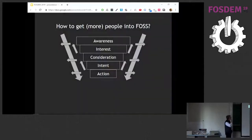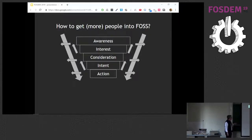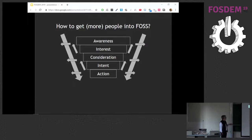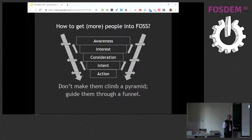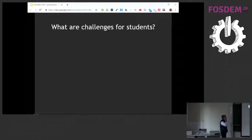The problem with the pyramid is it takes a lot of work to climb to the top. I'd like to suggest we should instead think about open source contributors as a sales funnel. We're trying to take people who are aware of the project and have them get more interested, then start thinking about using it, then actually use it — and eventually contribute. We don't want to force people to climb the pyramid; we want to lead them through a funnel so they can get involved more easily. That's the scarce resource: the time and attention of people.